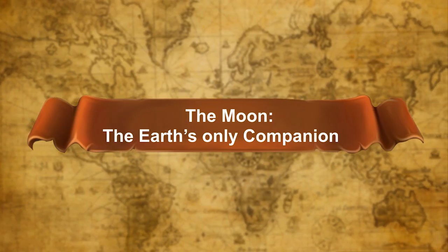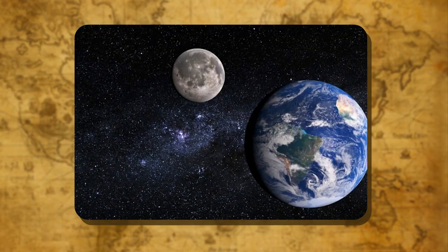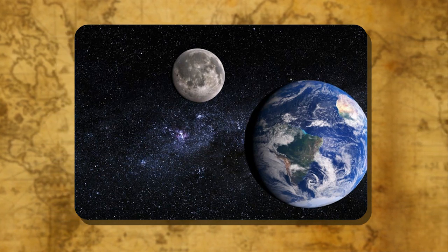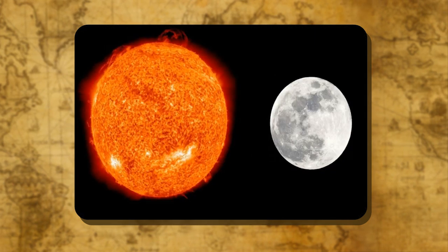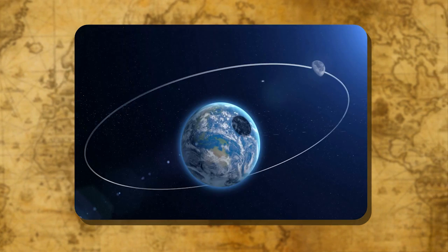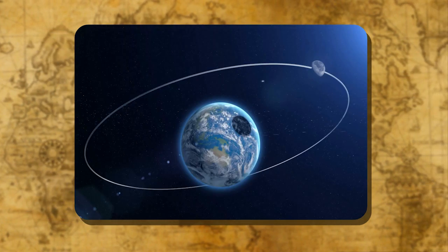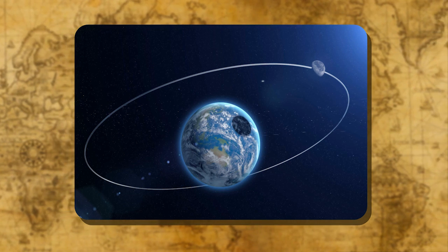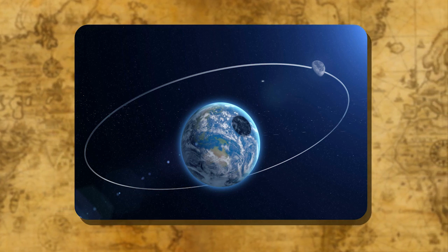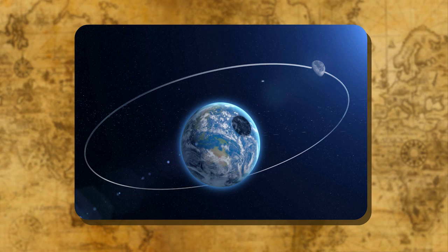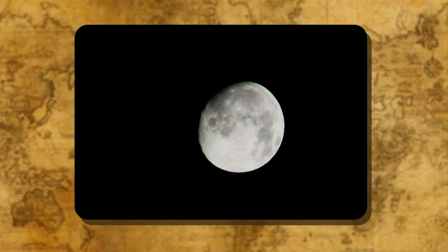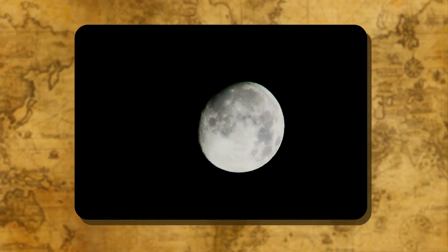The Moon — the Earth's only companion: The Earth's satellite is called the moon. Its diameter is about one-sixth of the Earth's diameter. It has no light of its own and reflects the light of the sun. The moon revolves around the Earth in about 27 days and seven hours, and takes exactly the same time to complete one rotation about its axis. Therefore we always see only one side of the moon. There is no air or water on the moon — it is very hot during the day while nights are very cold.